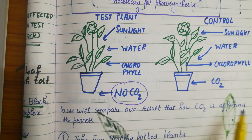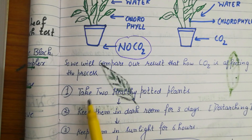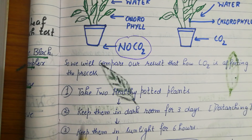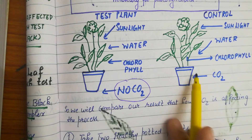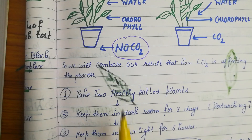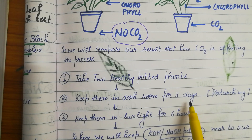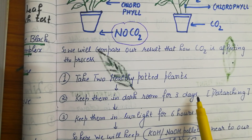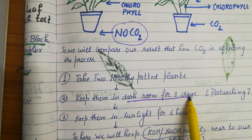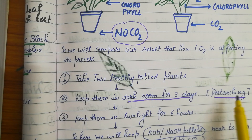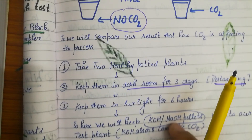Now, what you have to do: take two healthy potted plants of almost the same size. Keep them in a dark room for three days — as I already explained in my previous video, this is for de-starching, to remove the complete starch. Then keep them in sunlight for six hours.